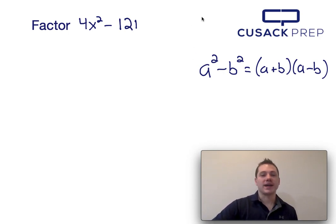All I have to do is recognize that a squared is in the same position as 4x squared and b squared is in the same position as 121.